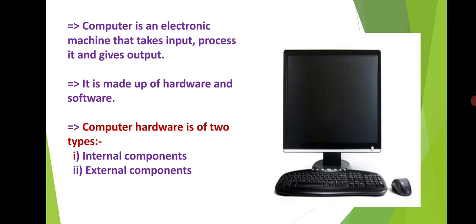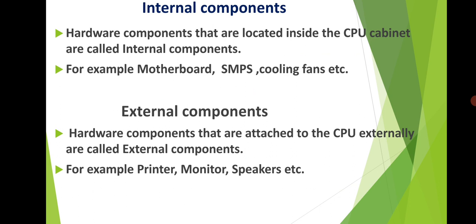Internal hardware components are those components which are located inside the CPU cabinet, for example motherboard, SMPS, cooling fans, etc. External components are those hardware components that are attached to the CPU externally, for example printer, monitor, speakers, etc.